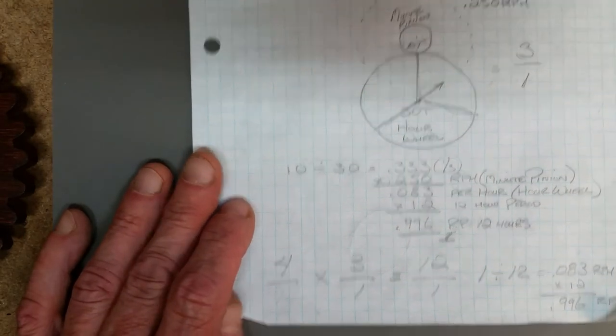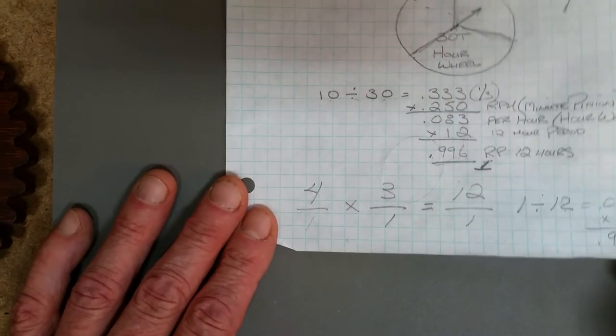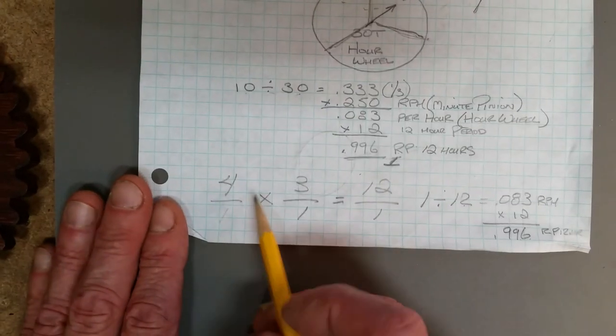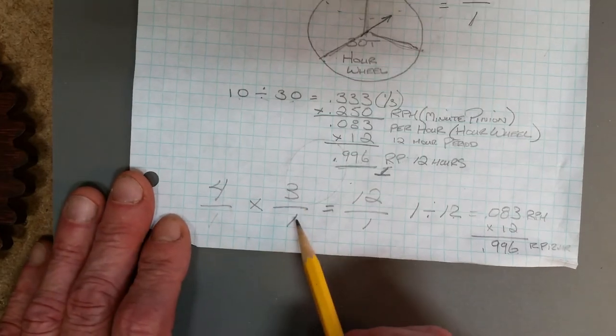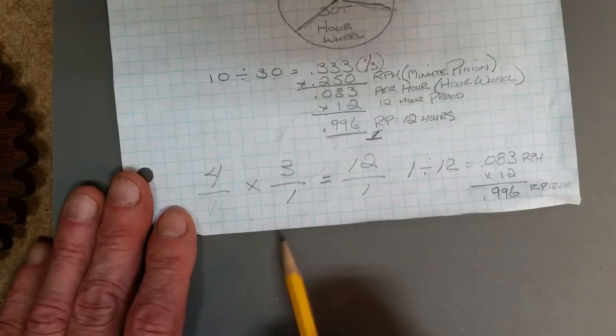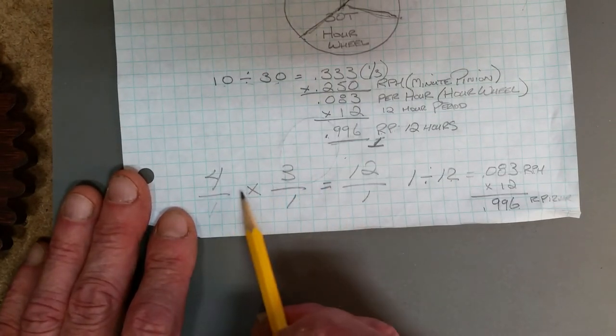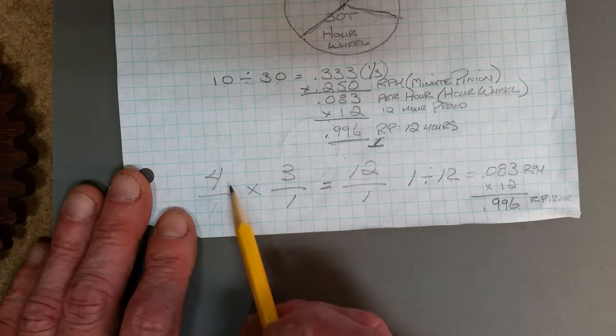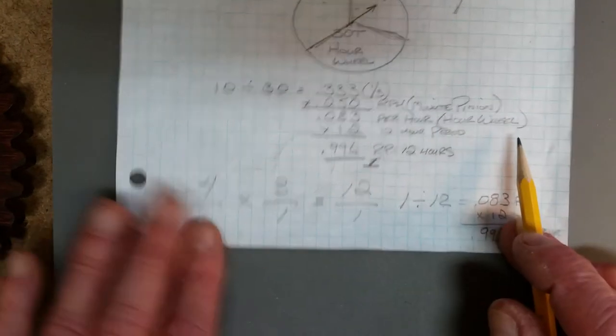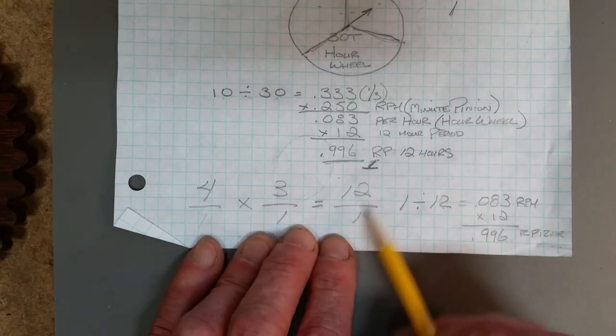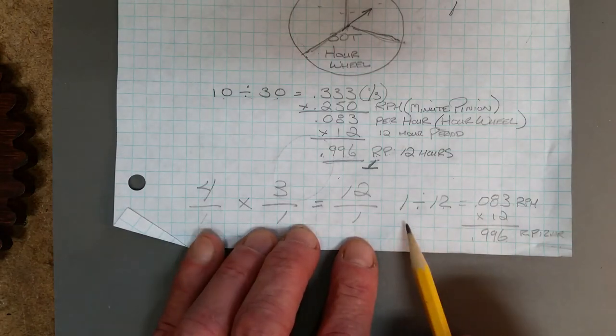Now there's a quicker way to figure this out. We got a 4 to 1 ratio gear and a 3 to 1 ratio gear. When we have combinations of gears like this in a gear train, we can multiply those ratios. So we got 4 times 3 equals 12 to 1. So the whole dial train is a 12 to 1 ratio and that's what we need.